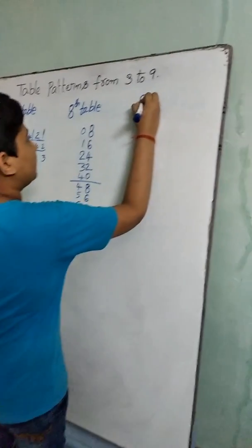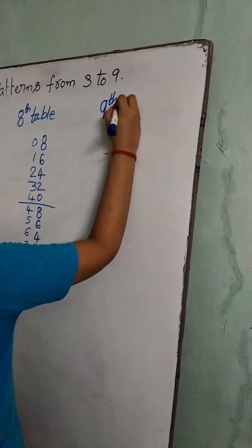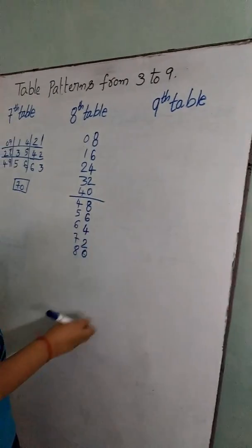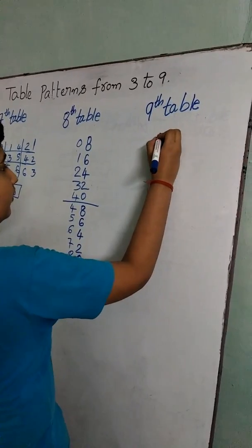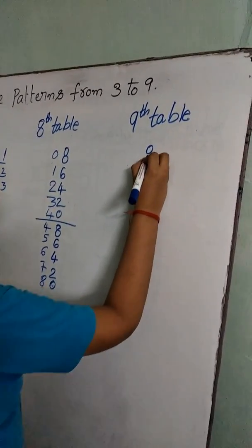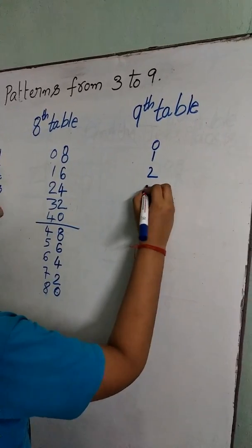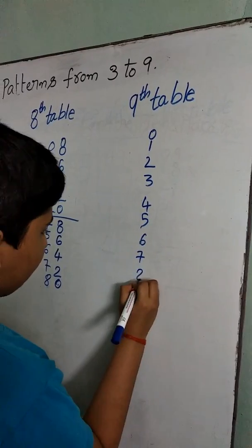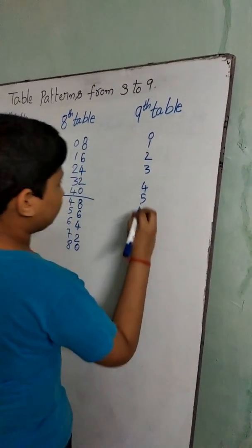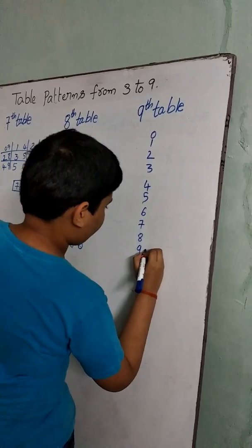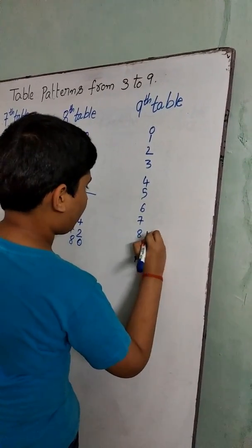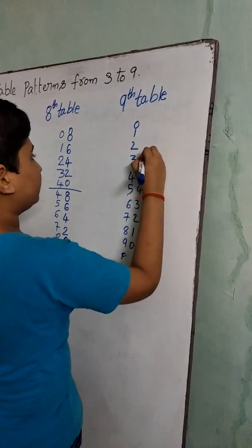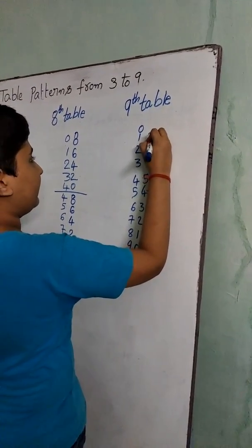Now we discuss about the 9th table. We should write the numbers from 0 to 9: 0, 1, 2, 3, 4, 5, 6, 7, 8. Again we should write the same forwards: 0, 1, 2, 3, 4, 5, 6, 7, 8, 9.